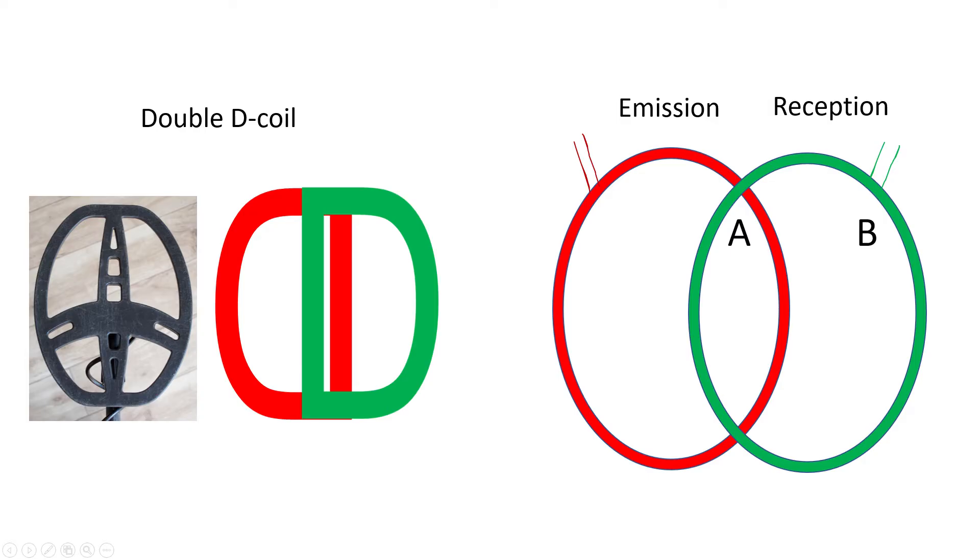The detector uses a double D coil, named after the two D shapes of the emission and the reception coil. For the sake of simplicity, I will display the coils as circles or ellipses in the rest of this video. As you can see, the two coils are partly overlapping. But why?